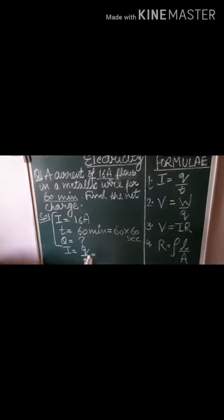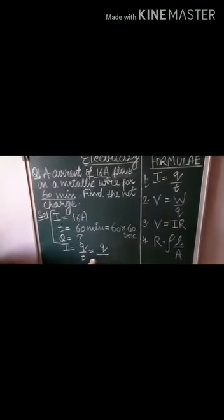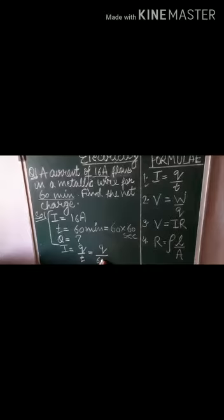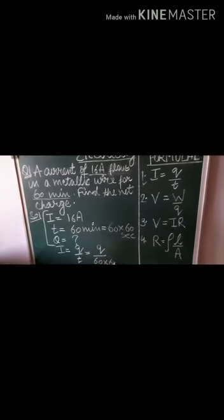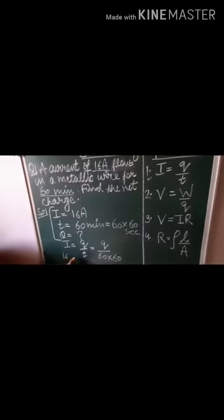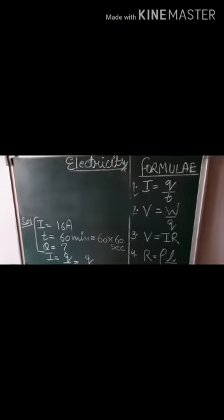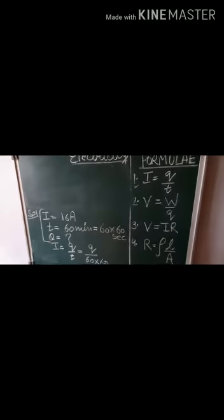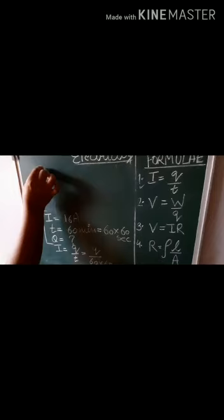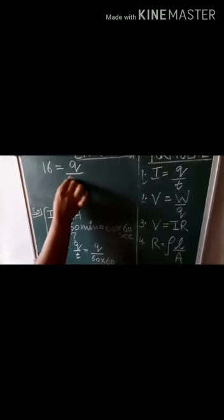Now put the values. Q we don't know, so we can write Q only. As we know time is 60 into 60, and current is 16 ampere. So here we have written the values. We will write the value of current also: I is 16 ampere equals Q by 60 into 60.